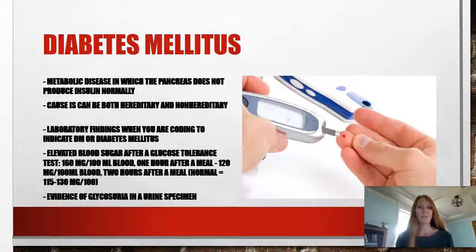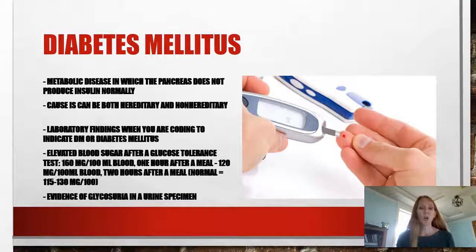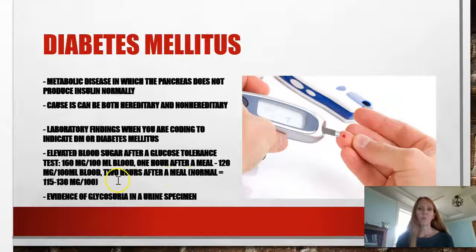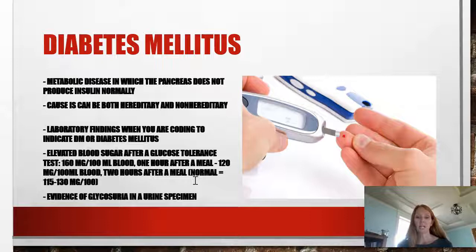Let's get started with diabetes. Diabetes mellitus is a metabolic disease in which the pancreas does not produce insulin normally. There's hereditary and non-hereditary types — we've all heard of type 1 or type 2, insulin dependent, non-insulin dependent. When we're coding, we sometimes want to look at laboratory findings, but we are not clinicians, so we cannot diagnose off a lab. You will see elevated blood sugars on glucose tolerance tests if they're over 160 per 100 milliliters of blood after 1 hour after a meal, or 120 per 100 two hours after a meal. The normal range is 115 to 130, so those glucose tolerance tests or lab findings are helpful when you're coding.